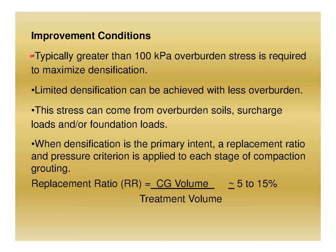Improvement conditions typically require greater than 100 kPa overburden stress to maximize densification, though limited densification can be achieved with less overburden. This stress can come from overburden soils, surcharge loads, or foundation loads. When densification is the primary intent, a replacement ratio and pressure criterion is applied to each stage. The replacement ratio — compaction grout volume divided by treatment volume — must be from 5 to 15 percent.